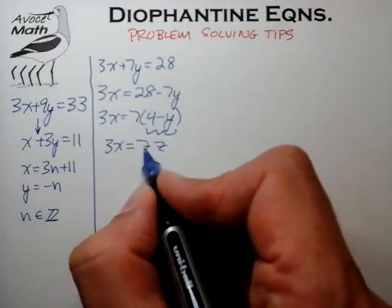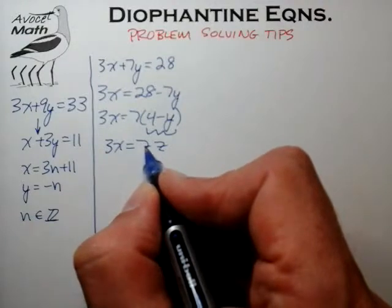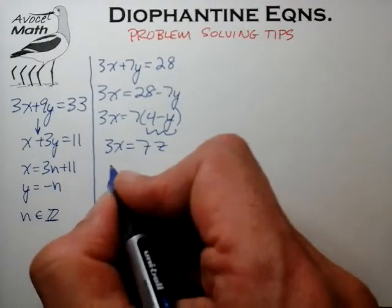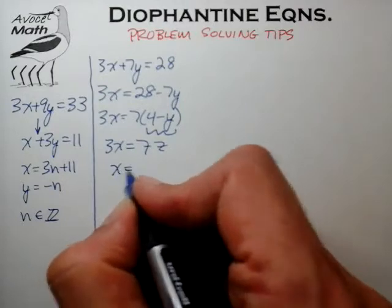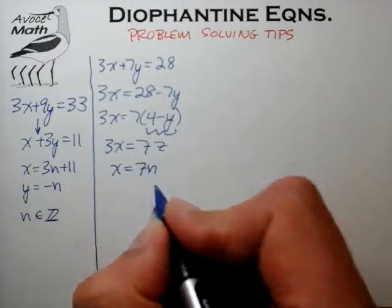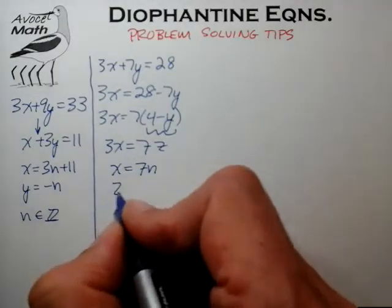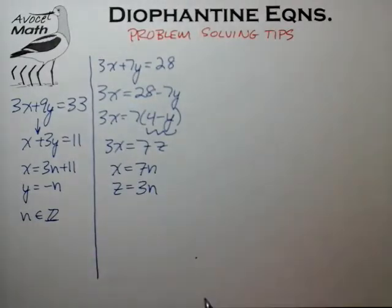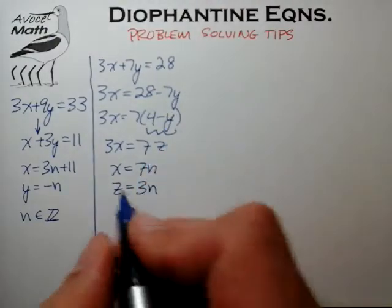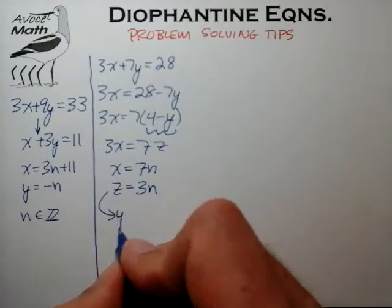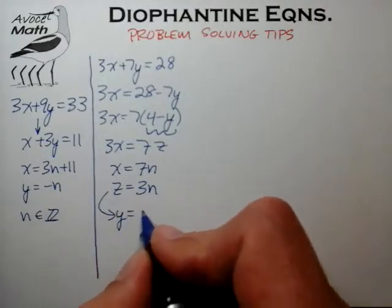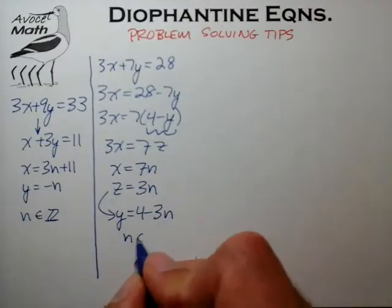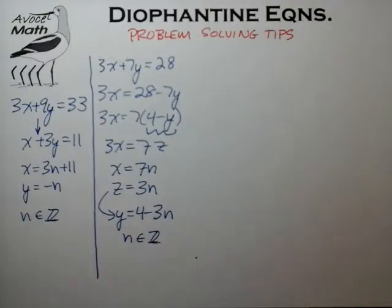You merely flip the coefficient to the other variable, and we find a solution set of x equal to 7 times some integer n, and z equal to 3 times that same integer n. We then take z and back-substitute to conclude that y equals 4 minus 3n, again for n an element of all integers.